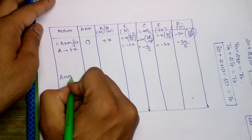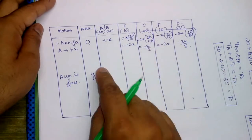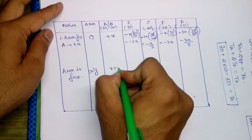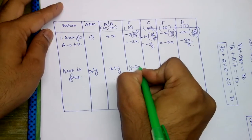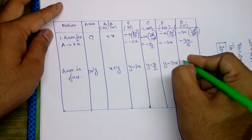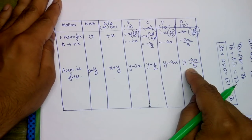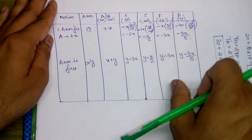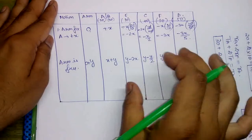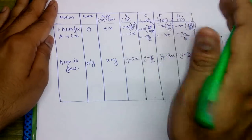Step 2: Free the arm and add Y to all columns. The net values become: Arm = Y, A/B = X+Y, E = Y-2X, C = Y-X/2, F = Y-3X, D = Y-3X/5. Remember: for external mating, the sign reverses; for internal mating, the sign stays the same.